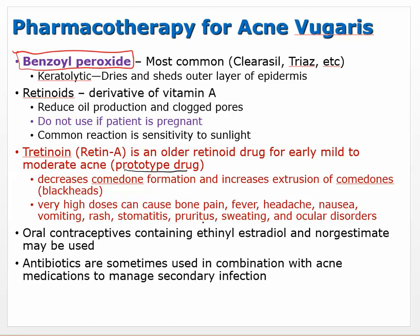Very high doses of retinoids can cause bone pain, fever, headache, nausea, vomiting, rash, stomatitis, pruritus, sweating, and ocular disorders, because retinoids are also found in the eye. A common reaction is sensitivity to light. Do not use retinoids if the patient is pregnant. Oral contraceptives containing ethinyl estradiol and norgestimate may also be used, as overproduction of androgens — often seen during puberty — increases sebaceous gland activity and oil production. Antibiotics are sometimes used in combination when there's a secondary infection, but antibiotics alone don't effectively prevent acne.